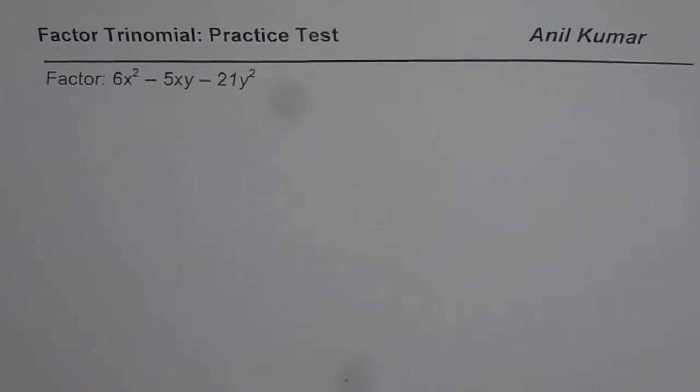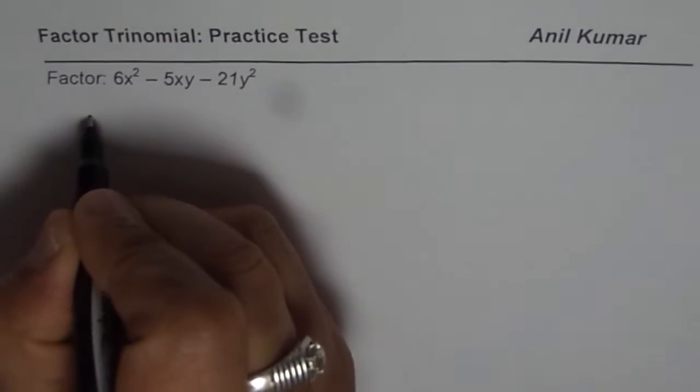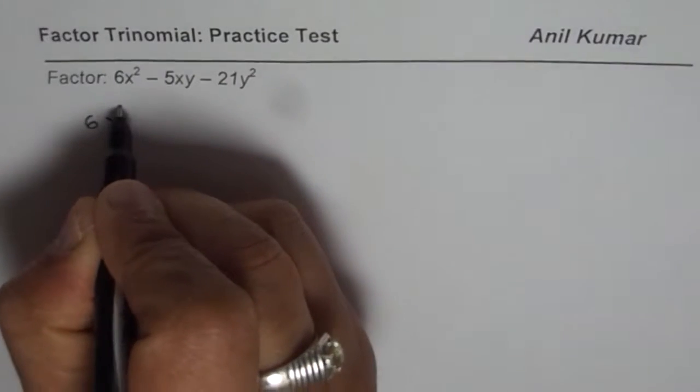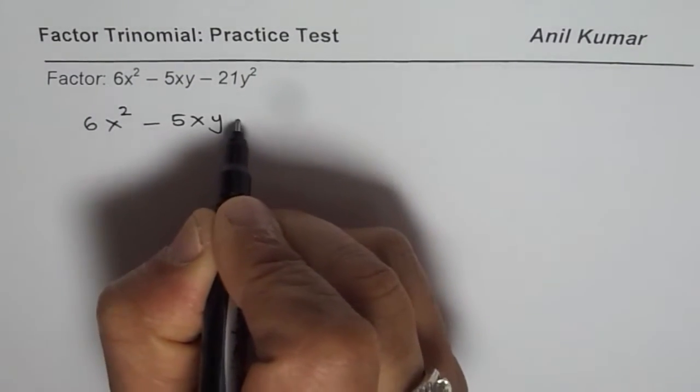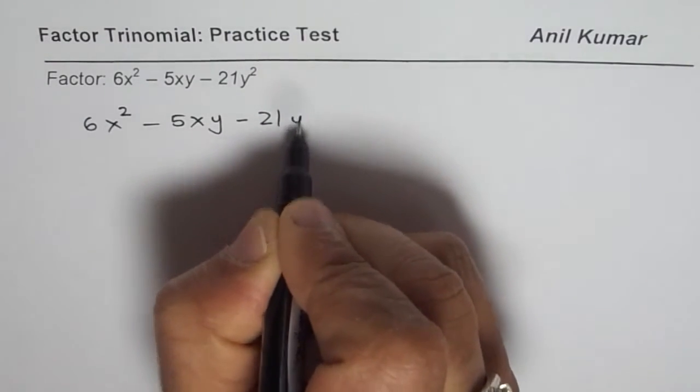You can pause the video, factor it, and then look into my suggestion. Now here, the numbers are slightly bigger than what we are used to. We have 6x² - 5xy - 21y².